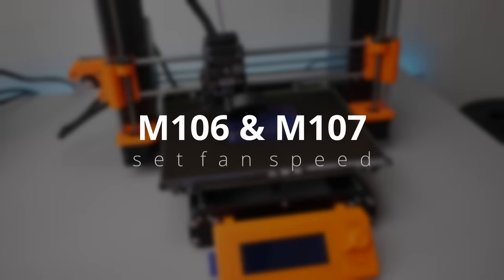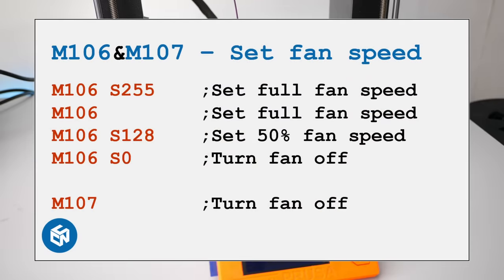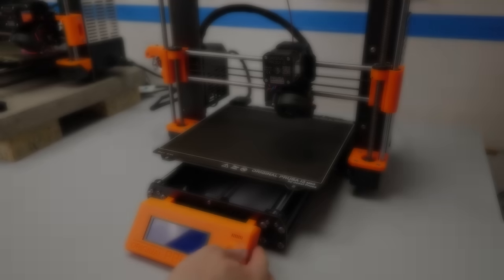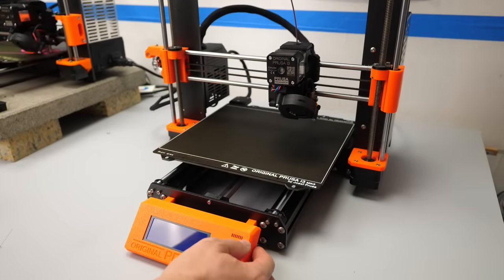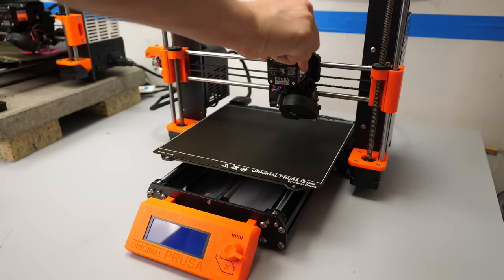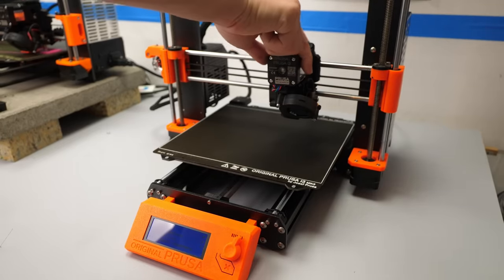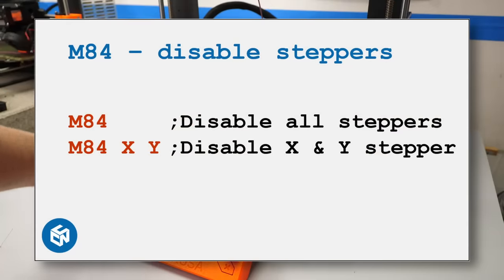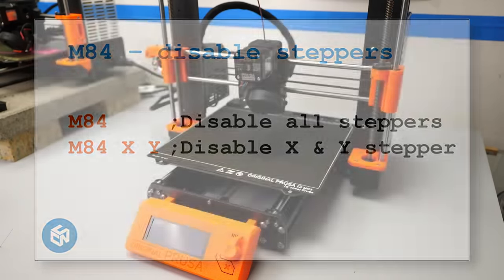Another important command is M106, which is used to control the cooling fan. The parameter S, ranging from 0 to 255, lets you adjust its speed — full power is 255 and half power is 128. If you want to turn it off completely, M106 S0 or the dedicated command M107 gets used. The last command is M84: stepper motors remain powered after moving to avoid losing position, but if you want to disable them so axes can be moved by hand, you can use M84 for all axes, or M84 with the X, Y, Z, and E parameters to turn off individual axes.